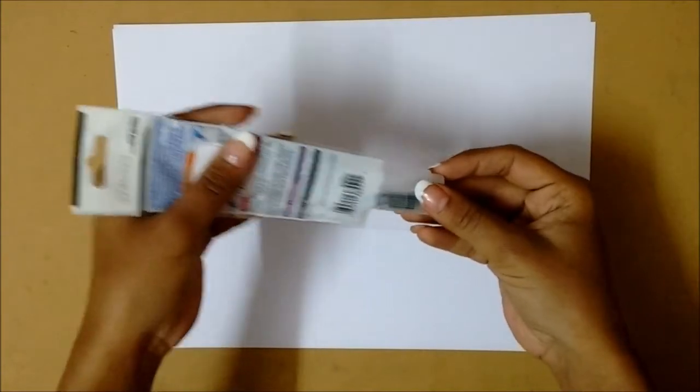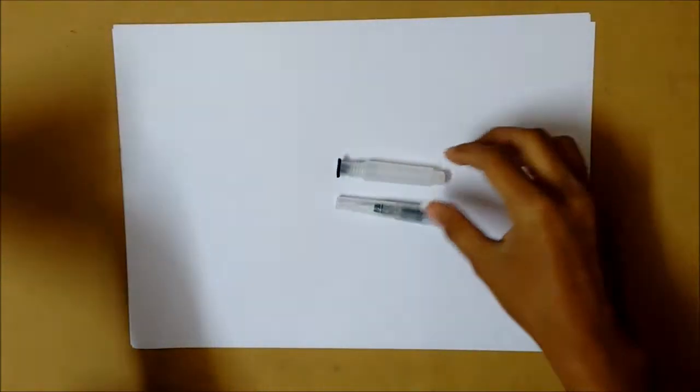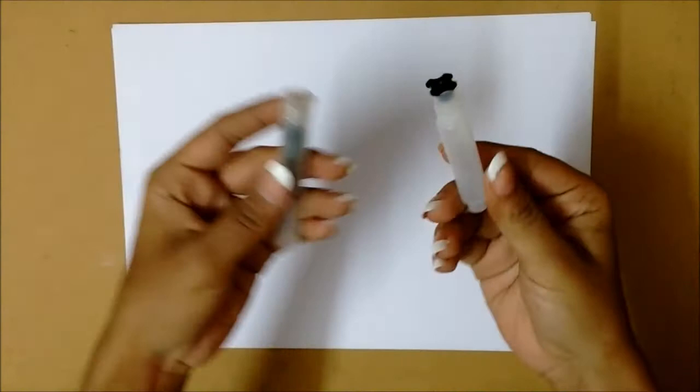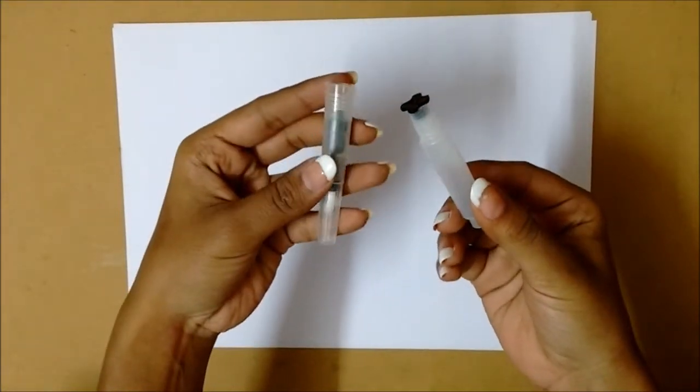Let's open it. Okay, here it is. So it has got two parts: one is the brush and one is the water tank.